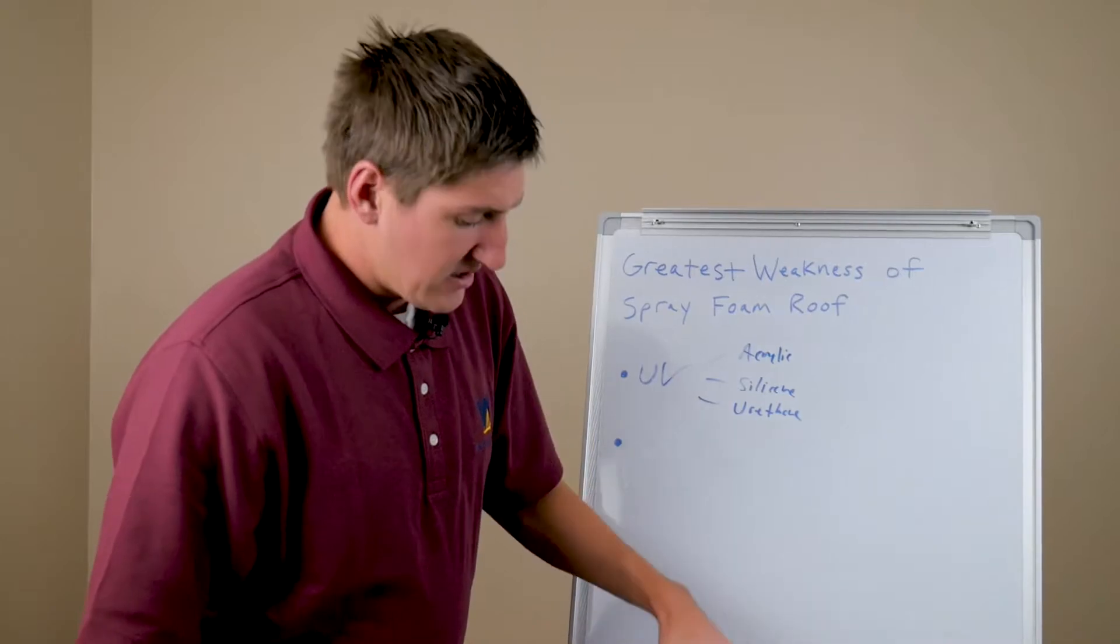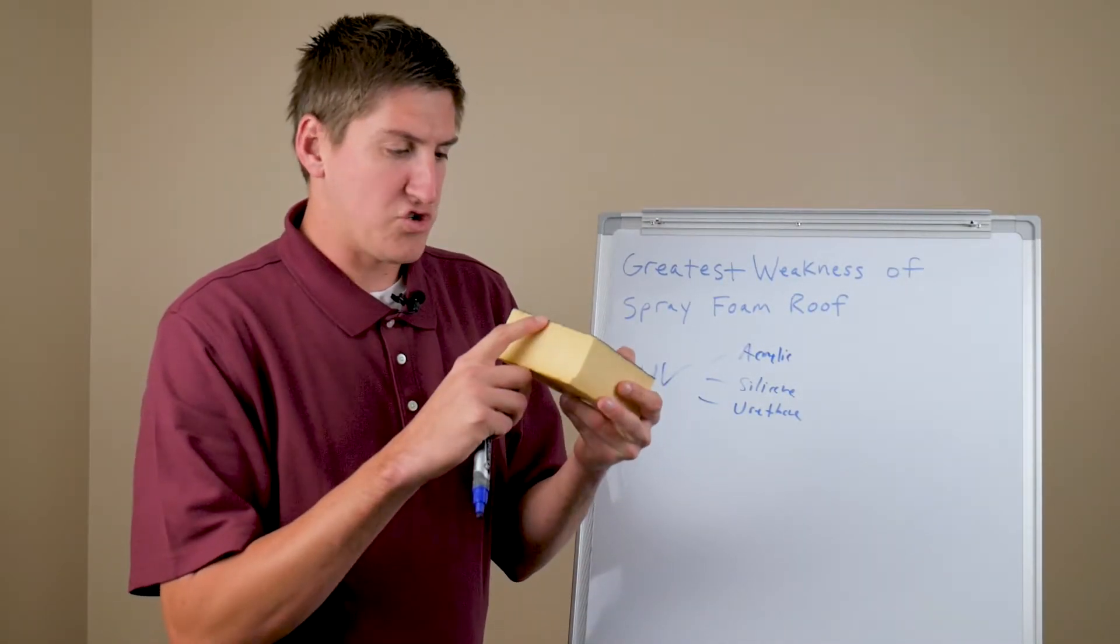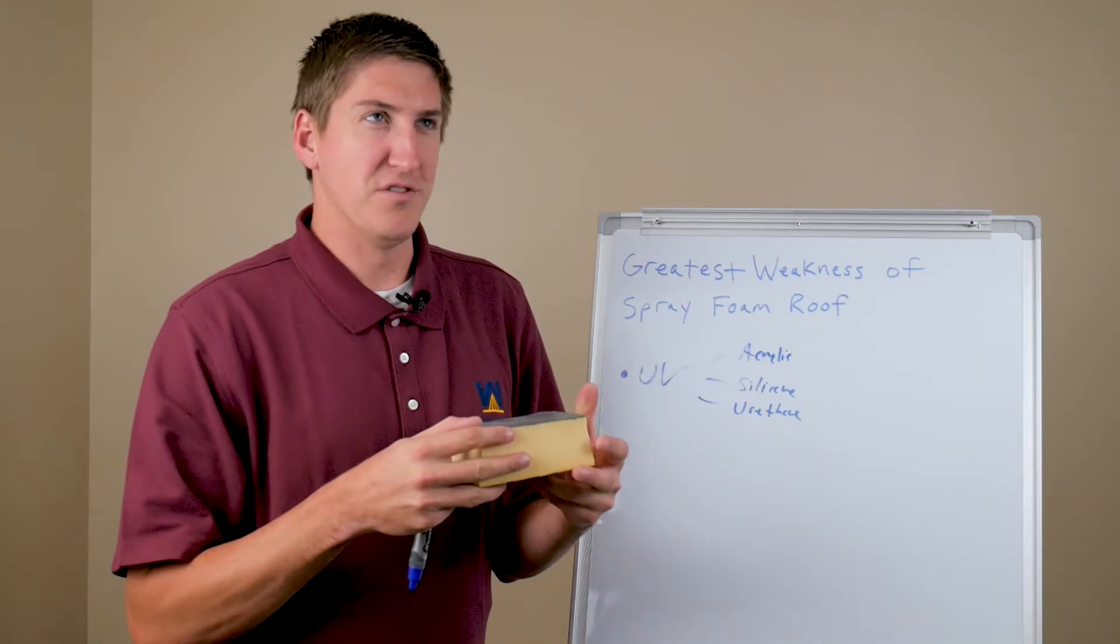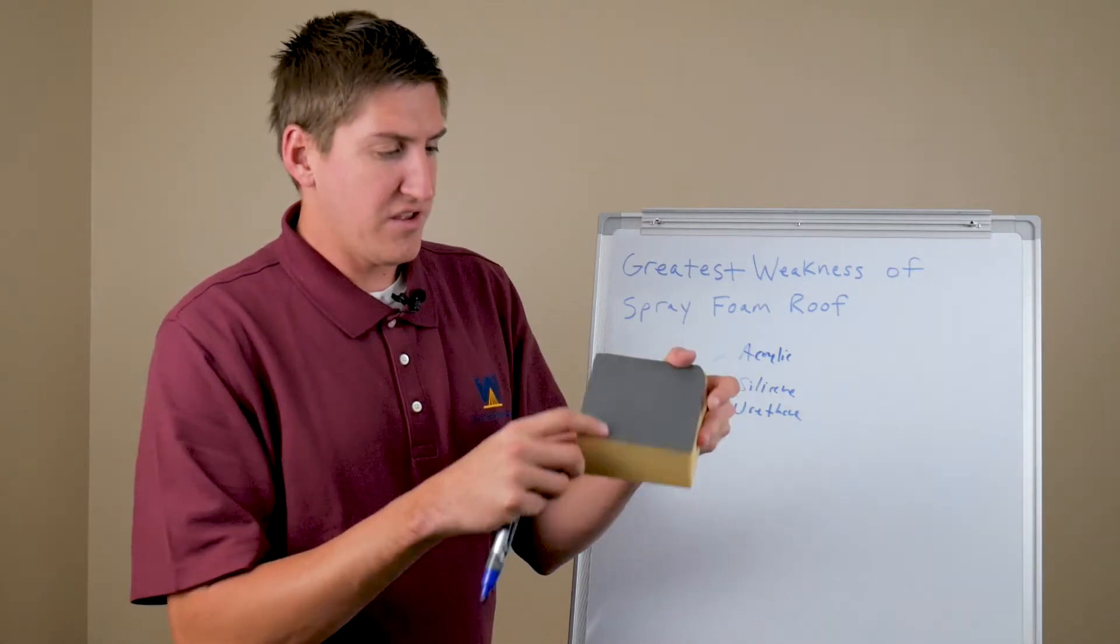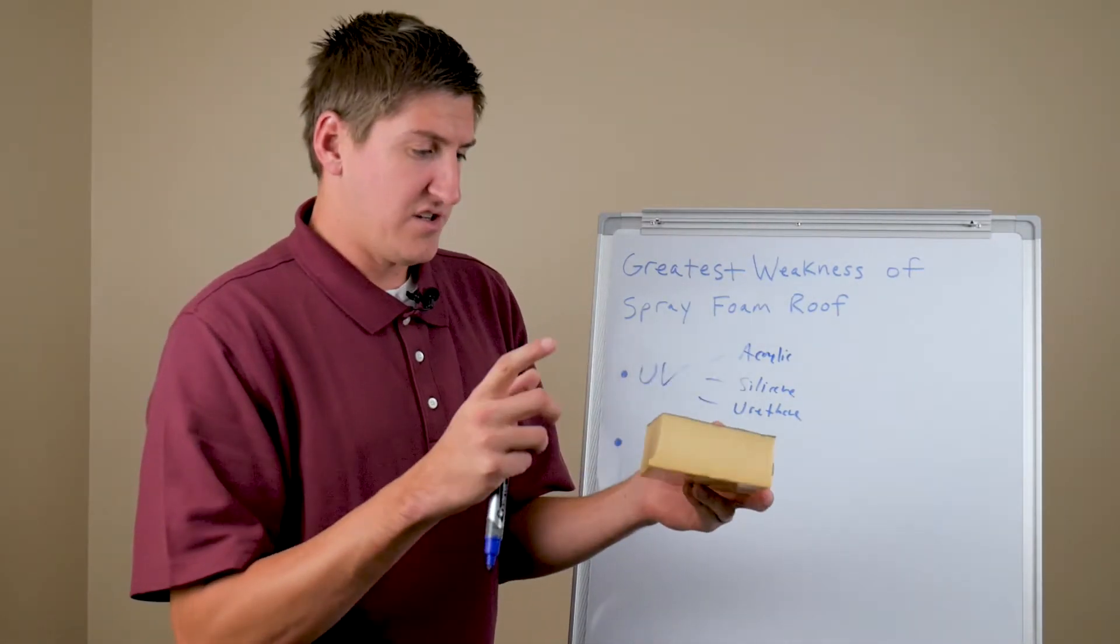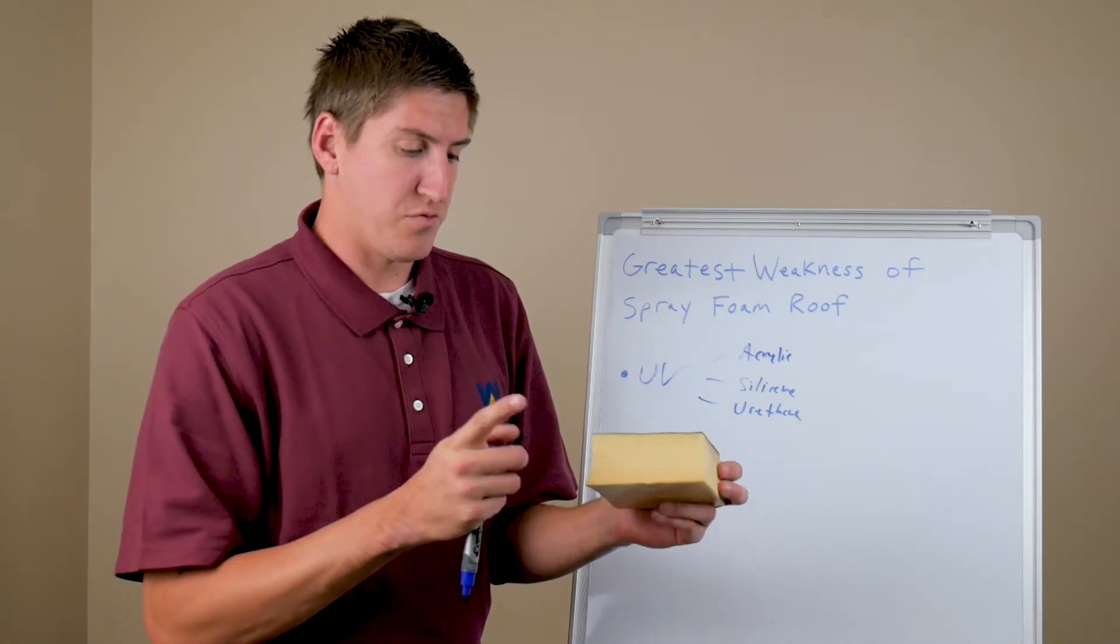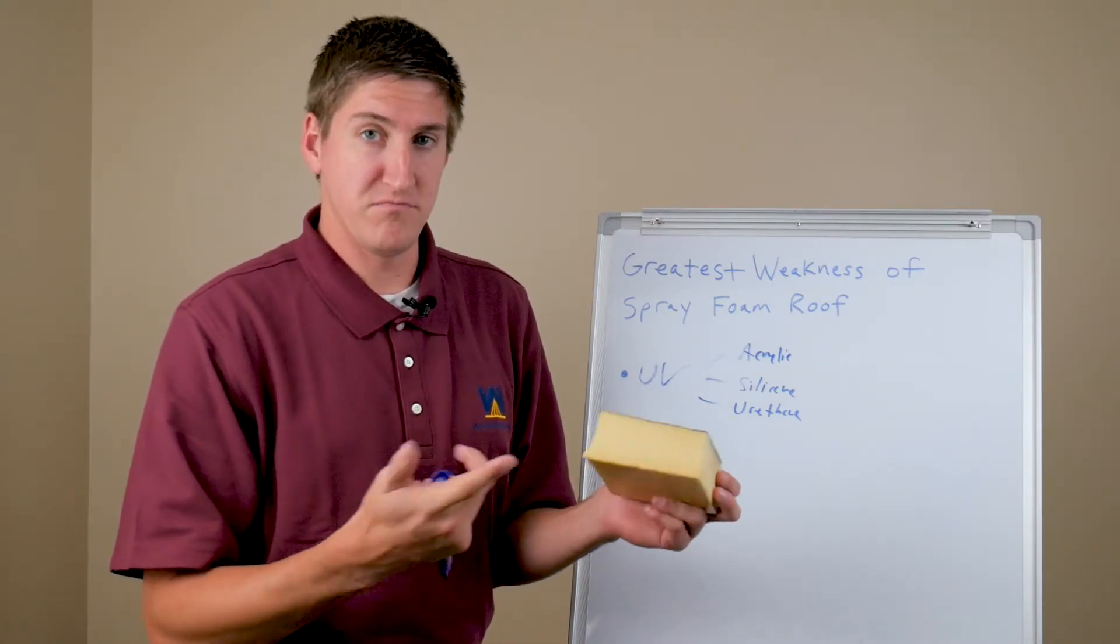This is kind of your roof here. So it'd be an inch and a half of spray foam and 20 to 30 mils. Now a mil is very small. The great part here is the coating on top. So the spray foam, the coating on top, and this will protect your spray foam roof from the UV rays.